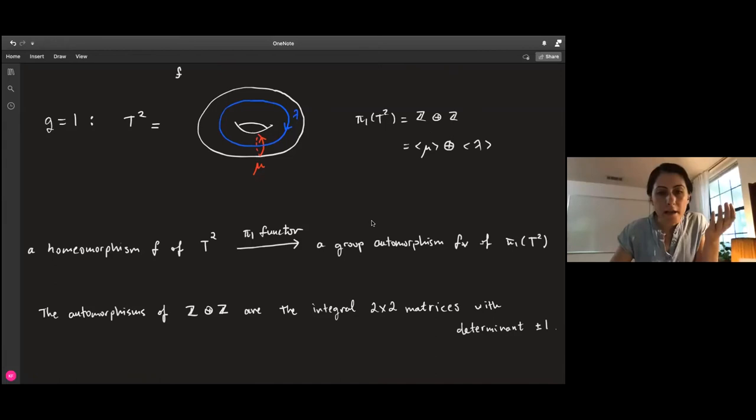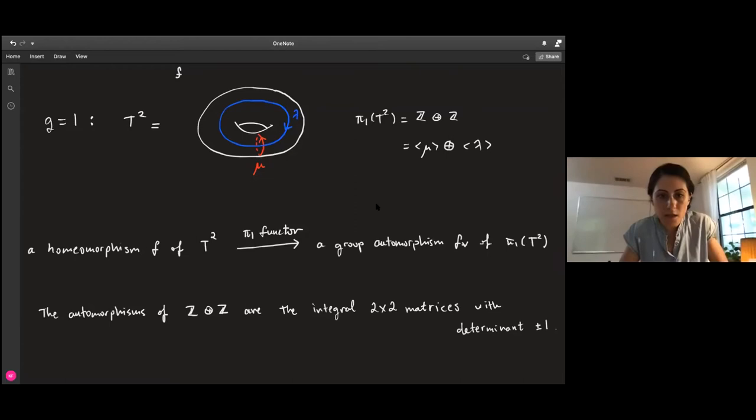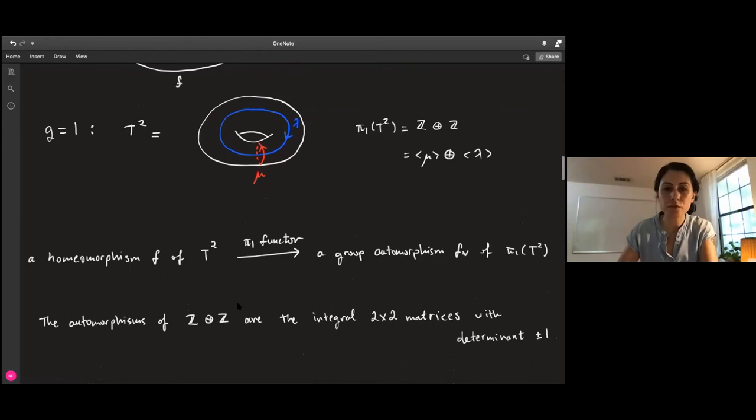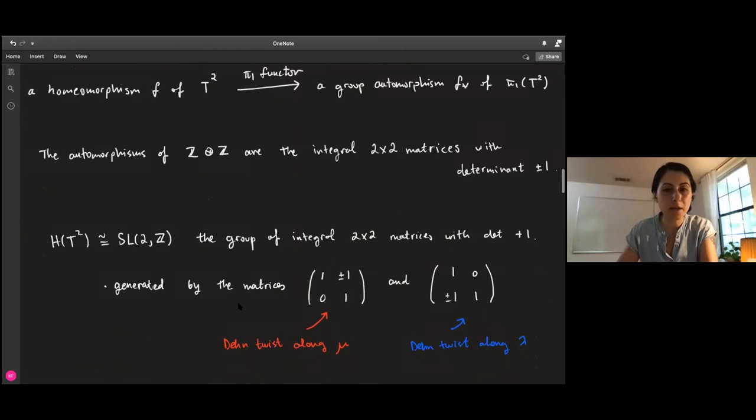We know all automorphisms of Z ⊕ Z, which are basically 2×2 matrices with integral entries whose determinant is either plus or minus 1. Plus and minus 1 determines whether the homeomorphism is orientation preserving or reversing. Hence the mapping class group is the group SL(2,Z), the special linear group.